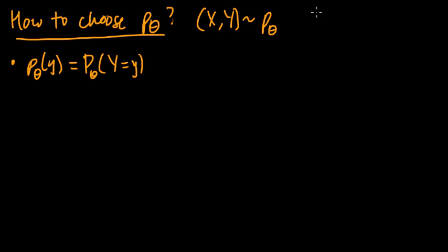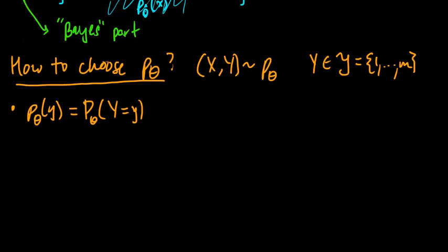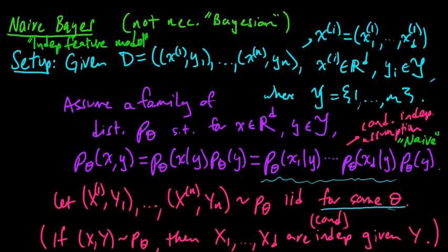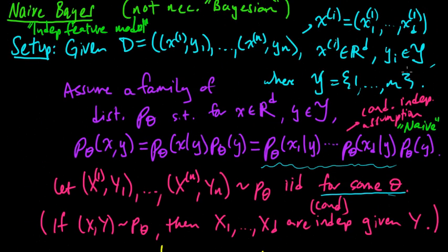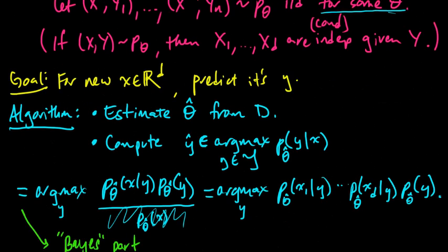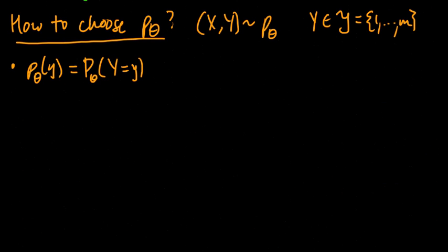So since y, remember, y is in some finite set, 1 through m, we're just doing classification here. So remember here, y was in this finite set. Well, we just numbered it from 1 to m. It could be any finite set, but just number it.